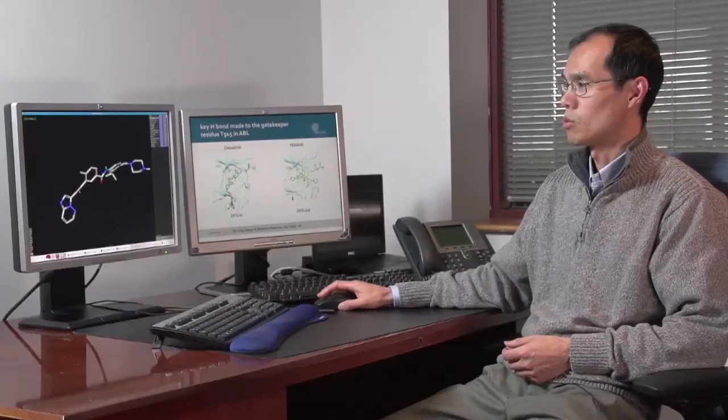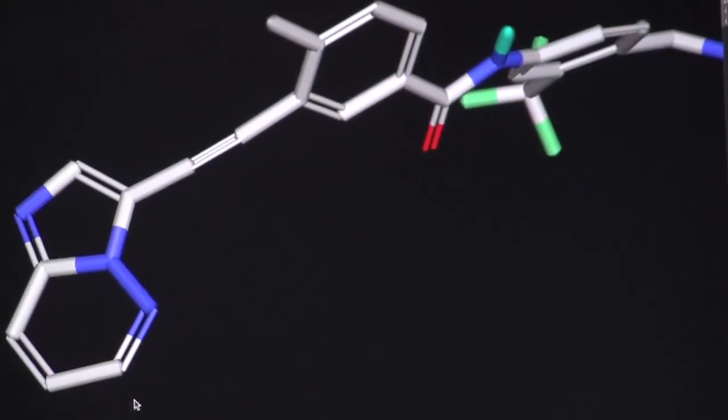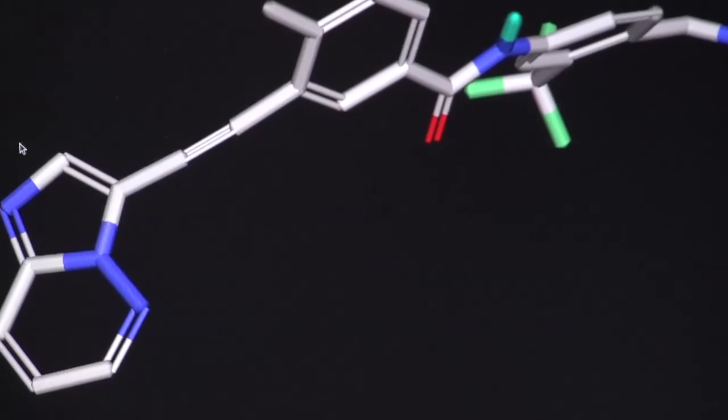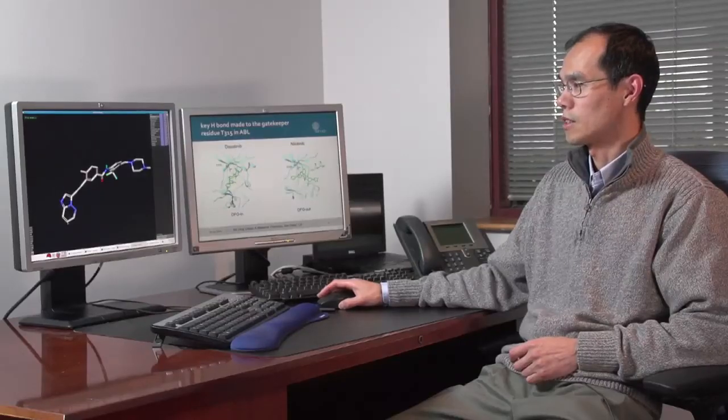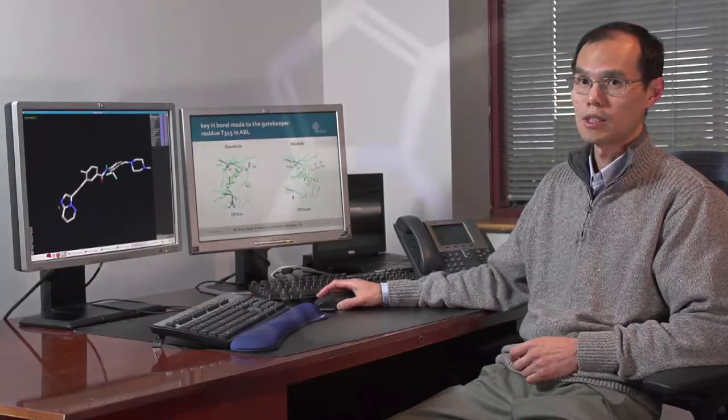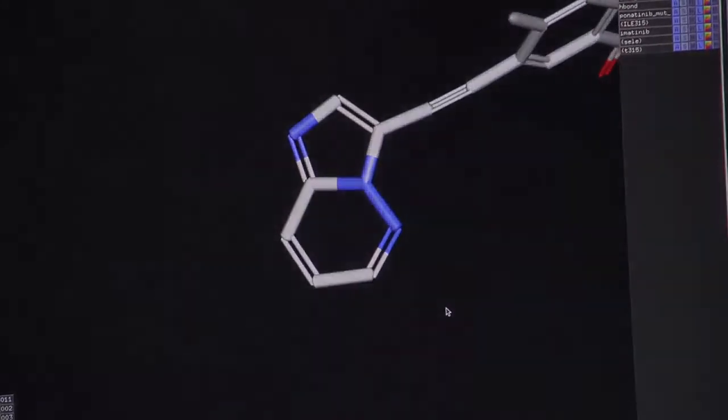This carbon-carbon triple bond linker has linear geometry and has pretty skinny volume. That fits our requirement to have minimum perturbation to that gatekeeper residue. We also did a lot of work on the scaffold which binds to the kinase hinge region for both improvement of potency as well as PK property.